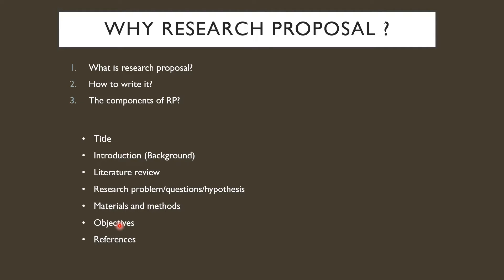Next, we have objectives — it is very important to write why your research proposal is important, what its significance is, and what your goals are. Finally, you need to make a list of citations you have used in the literature review in the form of references. It is very important to cite each and every author included in the literature review. This covers the structure of the research proposal.